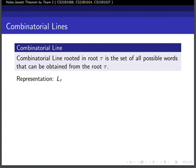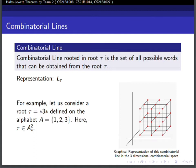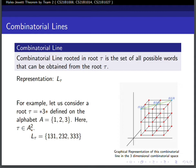A combinatorial line is the set of all possible words that can be obtained from a specific given root, represented as L_tau. Consider a root tau equal to star 3 star. The combinatorial line will contain 1 3 1, 2 3 2, and 3 3 3. Graphically, this is shown as the diagonal of the upper face of this cube.